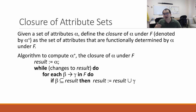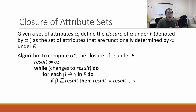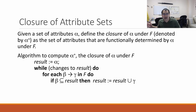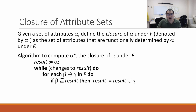To calculate the closure of alpha under F, start by saying: what are all the things functionally determined by alpha? Obviously everything in alpha is functionally determined by alpha. Then while you find new things to add, for each functional dependency beta→gamma in F: if all the things on the left side (beta) are already in the result, then add all the things on the right side (gamma) into your result, because those are now functionally determined by things you've already calculated.